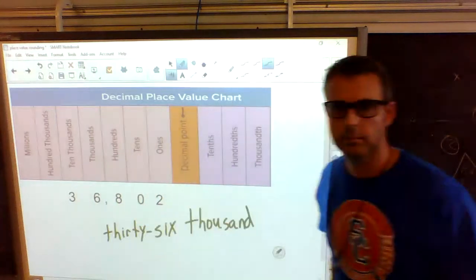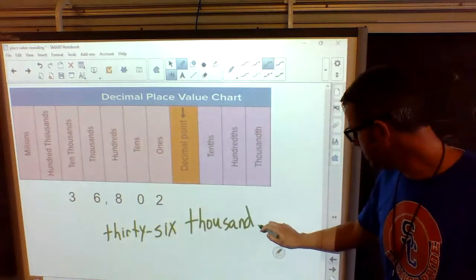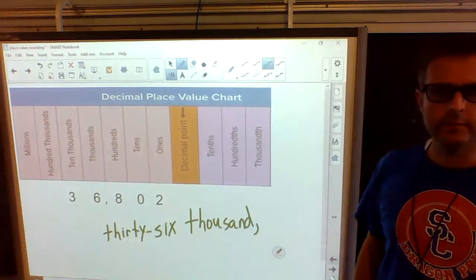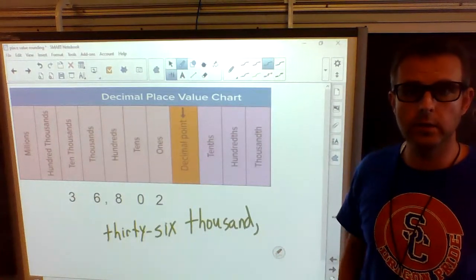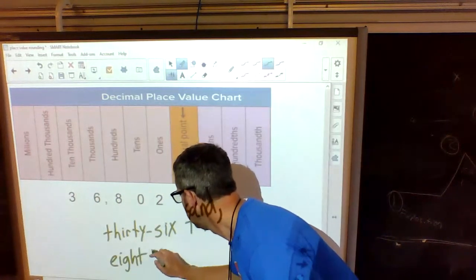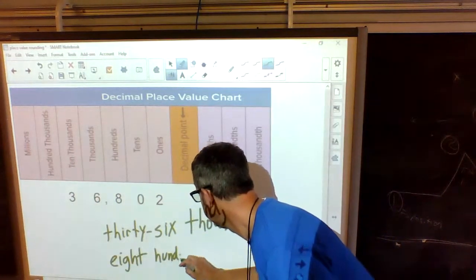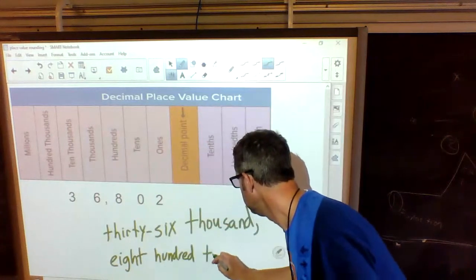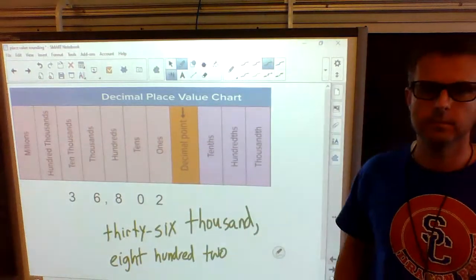And they told us what? Put the comma in after thousand. What's left? Eight hundred two. We write it. Eight hundred two. That's it.